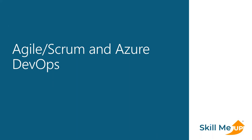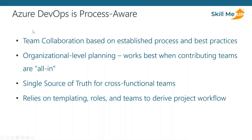First, we'll take up a background on Agile Scrum and Azure DevOps. Azure DevOps is process aware — it's providing team collaboration using established processes and best practices. We're doing this to provide organizational level planning, and it works best when contributing teams are all in. We use Azure DevOps to effectively track and advance the project timeline, and we can consider it as an accurate to-do list: what do we need to accomplish and deliver this product? It's also an opportunity for teams to collaborate quickly, assign to-do items to open resources based on role, and officially complete items to advance project completion over time.